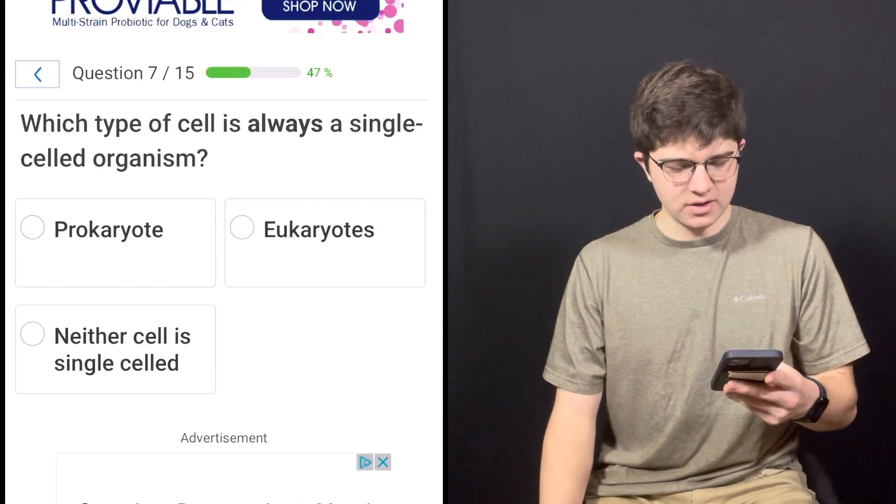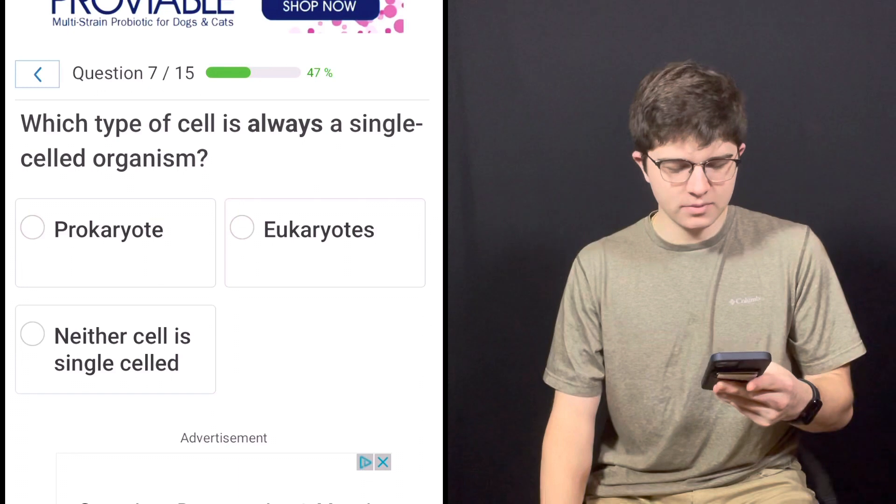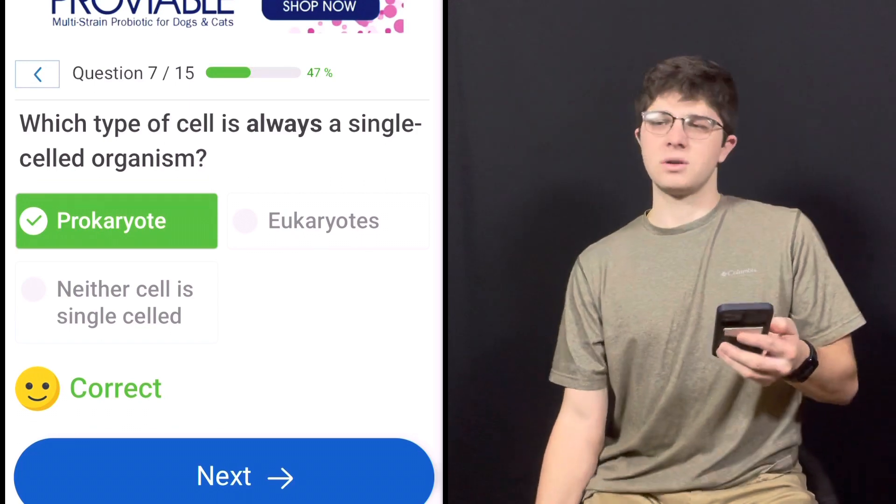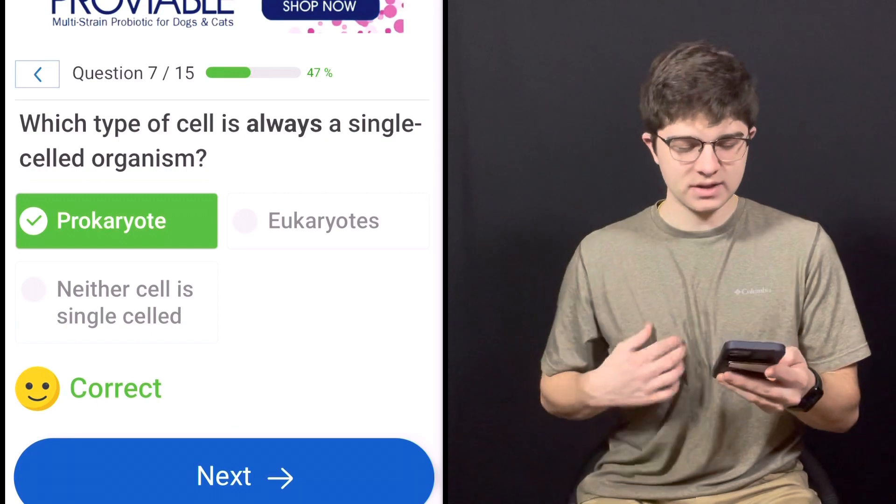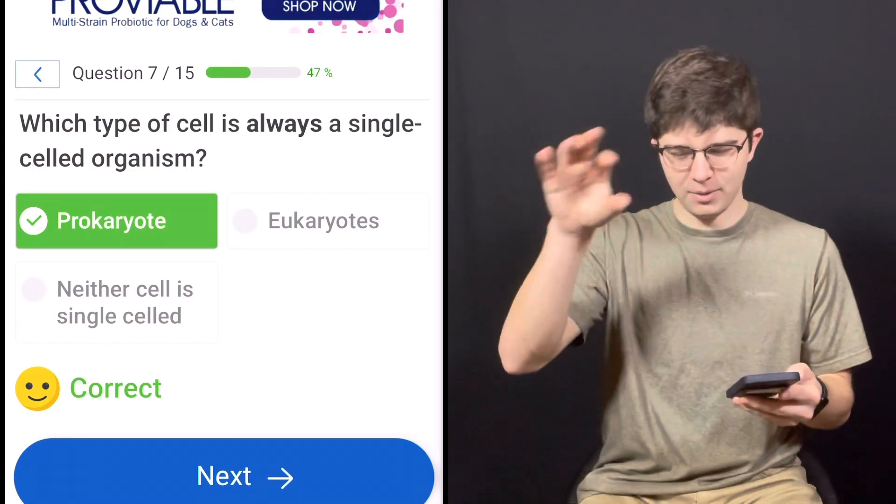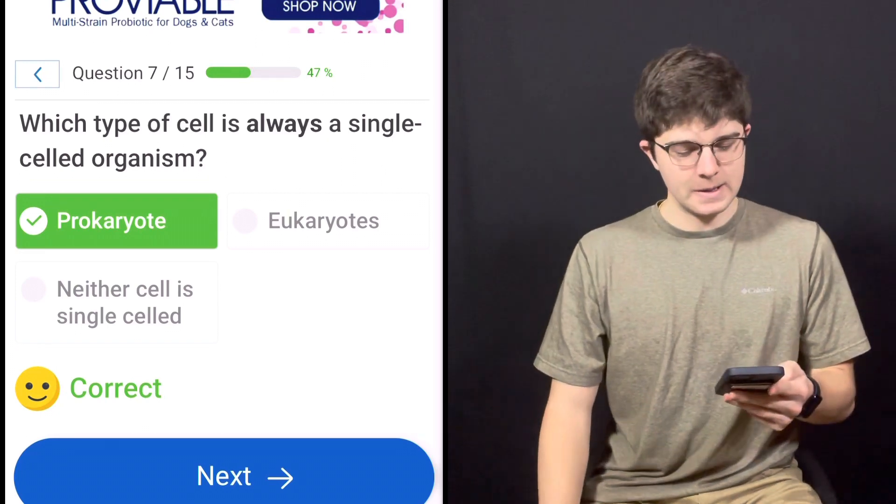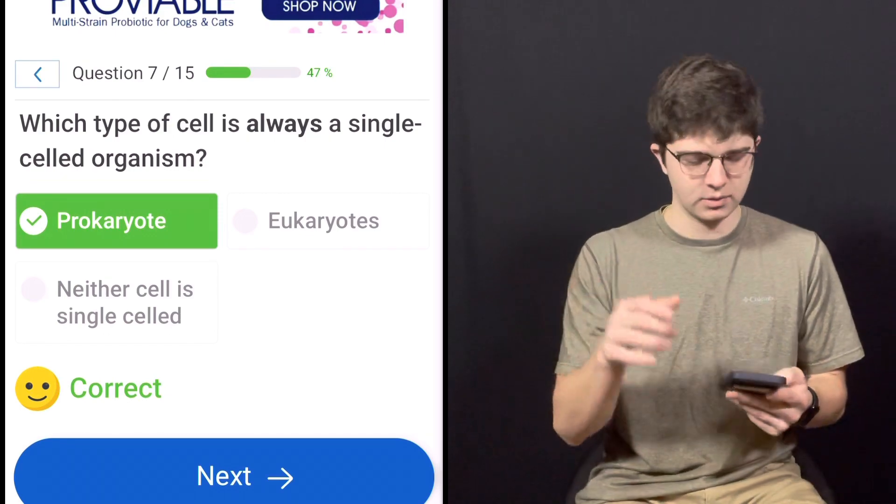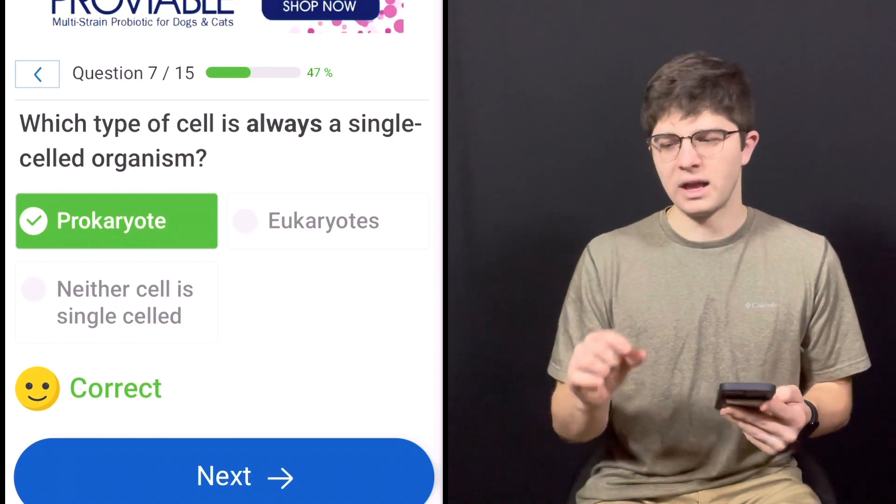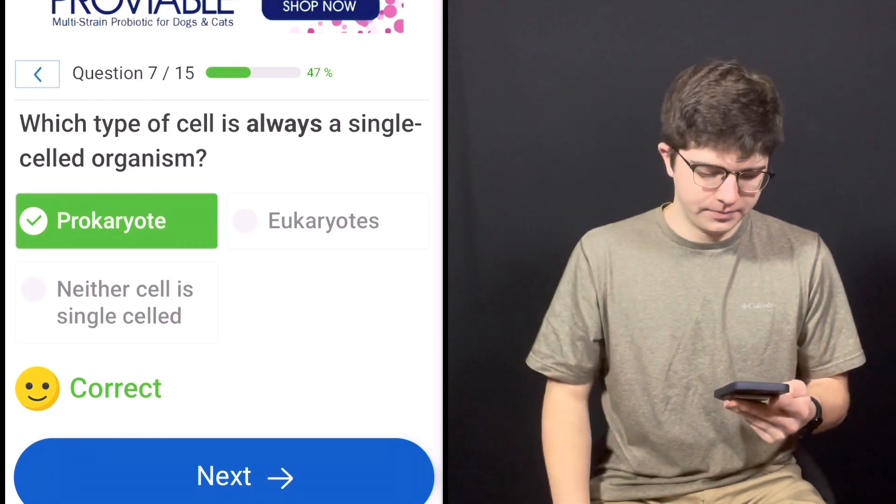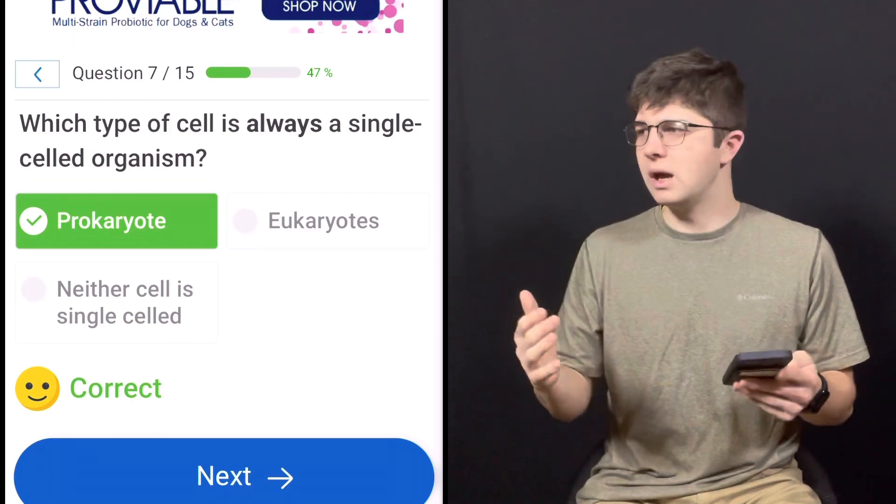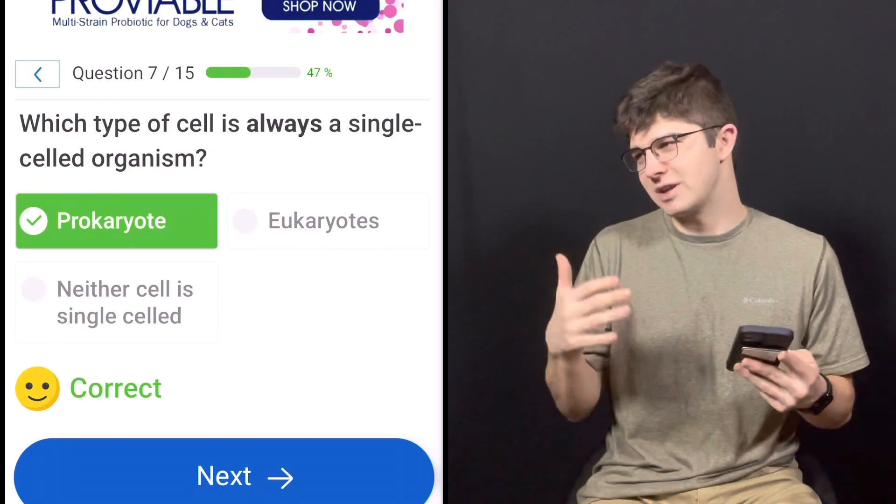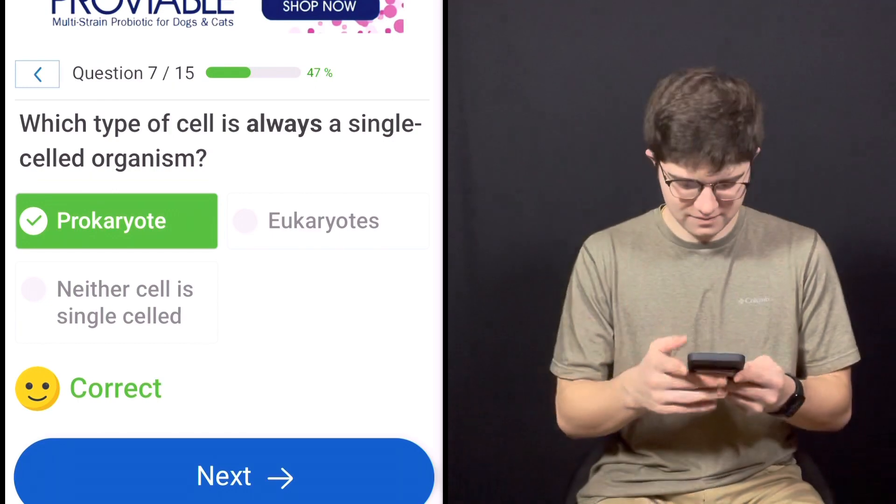Question number seven. Which type of cell is always a single-celled organism? Is it a prokaryote, a eukaryote, or neither cell is single-celled? Prokaryotes are always single-celled organisms. There are eukaryotic single-celled organisms, such as protists—they're in the branch protista in the animal kingdom. But eukaryotes make everything else from plants to fungus, trees, humans, elephants, tigers, alligators—pretty much everything.